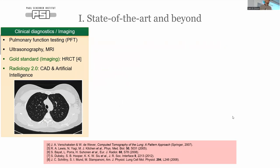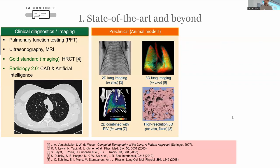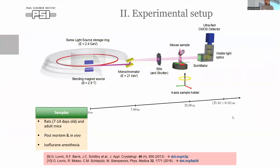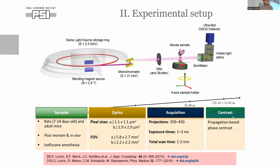There are preclinical animal models and imaging techniques that are fairly established, including 2D and 3D in vivo imaging and fixed samples. Our part, initially developed during my PhD and continued in follow-up projects, was to develop in vivo imaging at the micrometer scale.